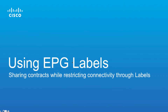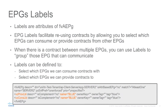In this demo we're going to look at using EPG labels for sharing contracts while restricting connectivity. Labels are attributes of ACI EPGs. EPG labels are made so that you can facilitate reusing contracts, allowing you to select which EPGs can consume or provide contracts from other EPGs. In that way they allow more granularity in the object model.